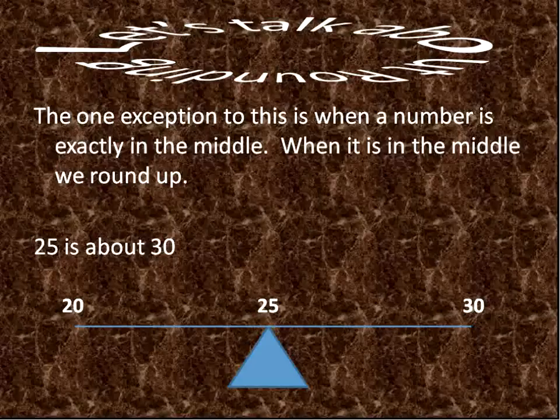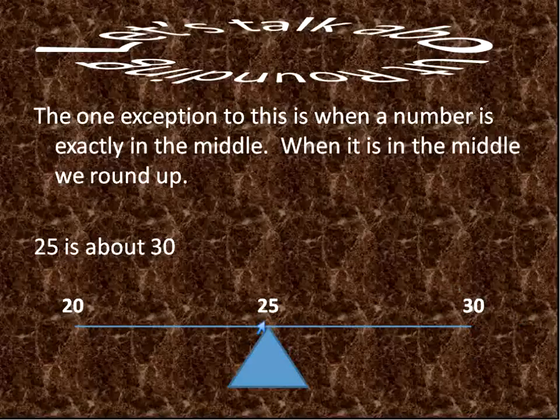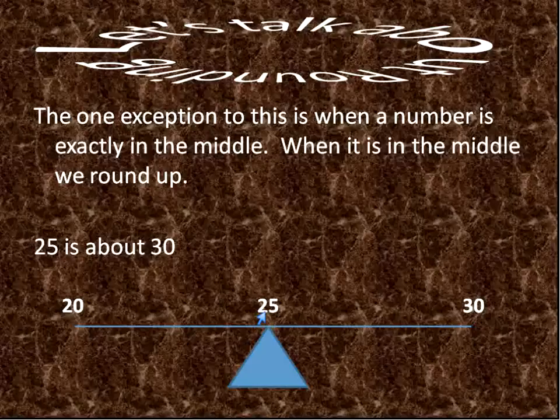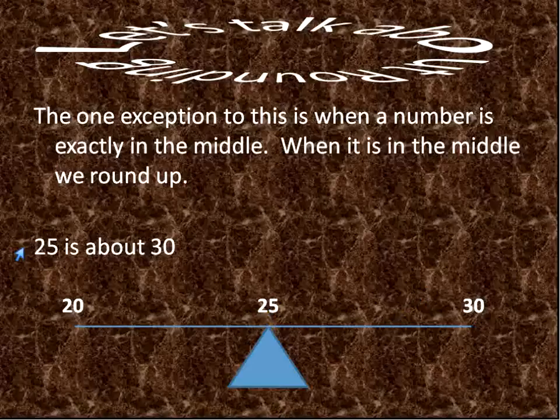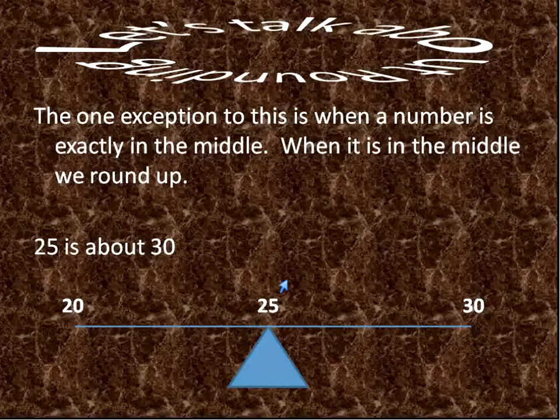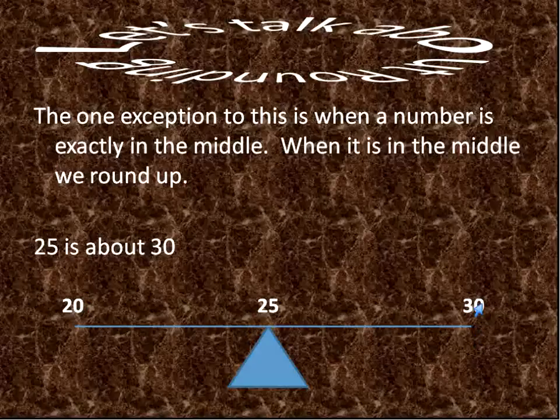There's one exception to this rule, and that's when you get a 20, 30, and the number in between is 25. So 25 is right dead center of this little teeter-totter seesaw thing, and whenever it's in the middle, we round up. So if it's 25, we would say we round that up and say it's about 30. The only case that that happens is when it's a 5 in between two numbers, like 25. We don't know which side it's closer to, so we round up.